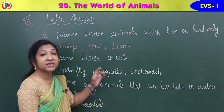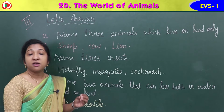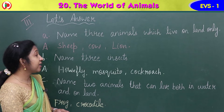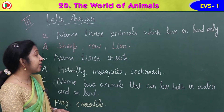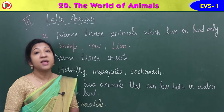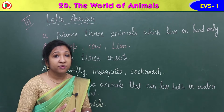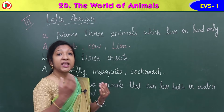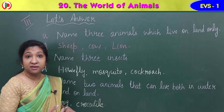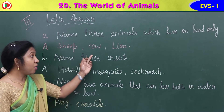Coming to the next question, Exercise 3: Let's answer. Here they have given a few questions and you have to answer them. Question A: name three animals which live on land only. There are many animals that live on land. Answer: sheep, S-H-E-E-P; cow; lion, L-I-O-N.